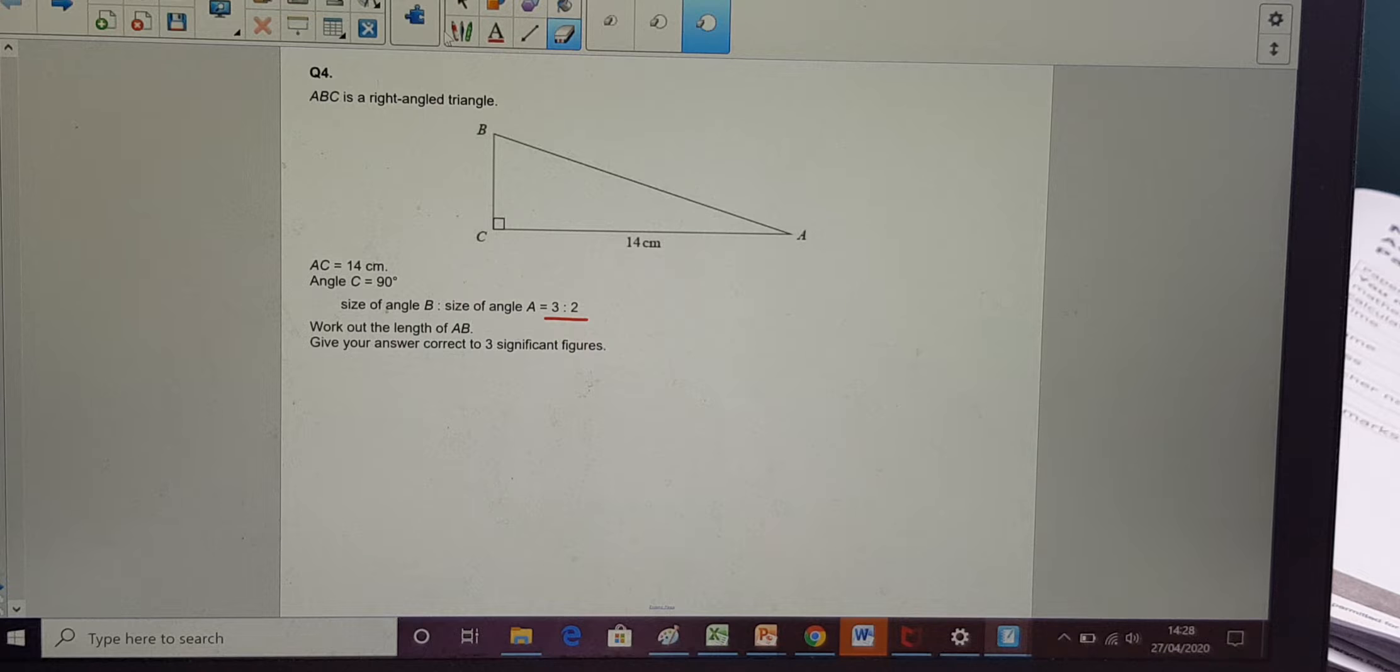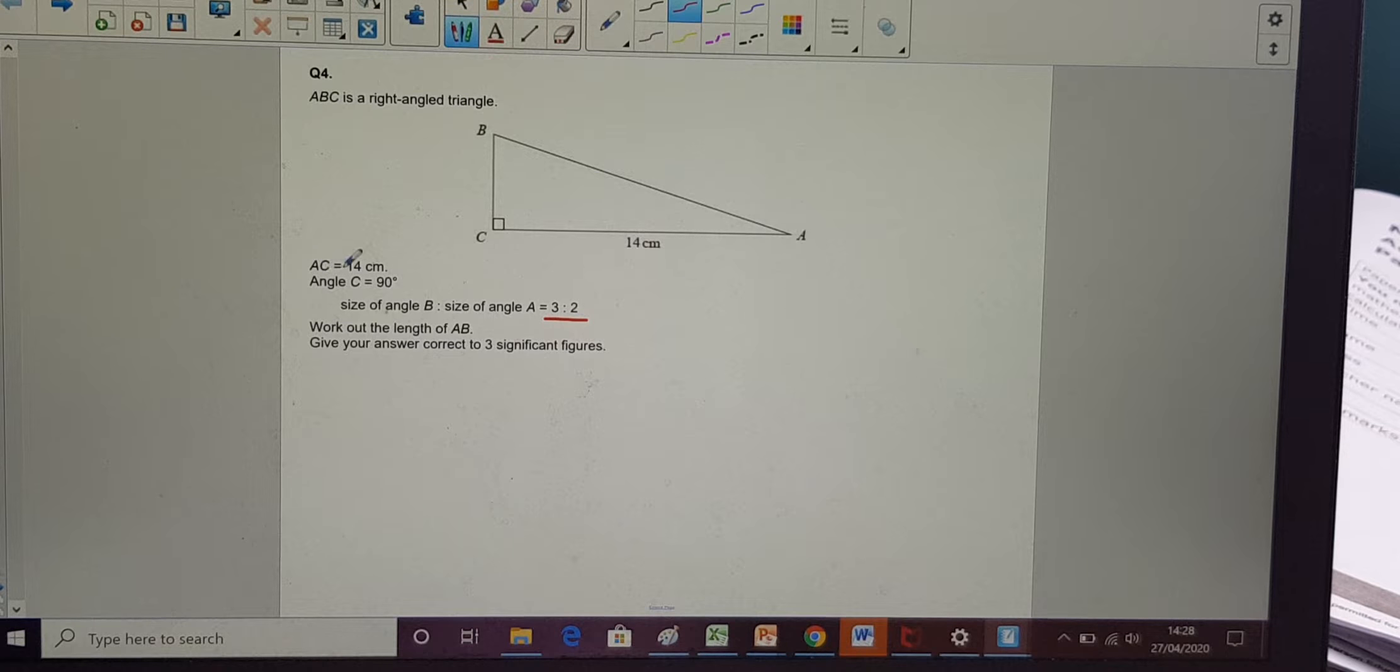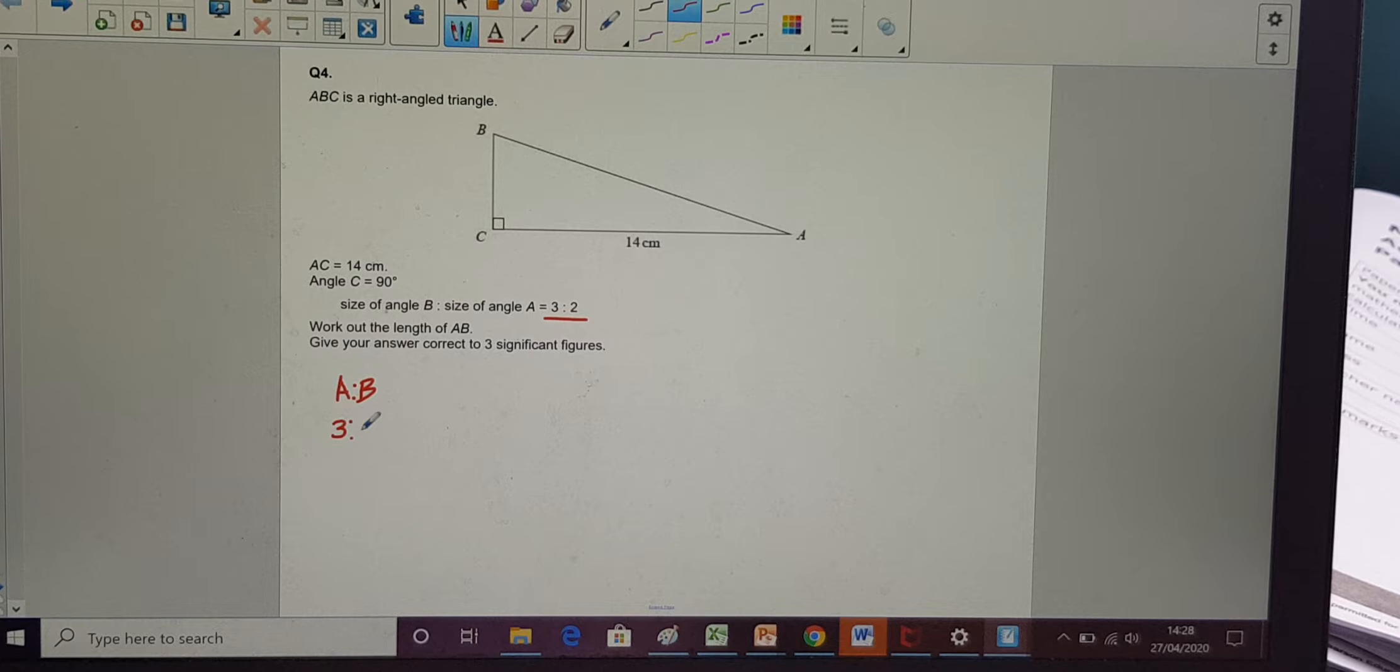Right, I'm going to start with this one, question four. ABC is a right angle triangle. I know that the length AC, so from A to C, is 14 centimeters. I know that angle C is 90 degrees. The size of angle B to the size of angle A is 3 to 2. So I know the ratio of angle A to angle B is 3 to 2.